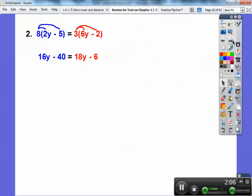This one, I'm going to go ahead and distribute, you guys, and you get that. And then I'm going to go ahead and subtract 16y from both sides and plus this red 6 to both sides, this red -6. And what happens is I get -34 equals 2y. So y equals -17.